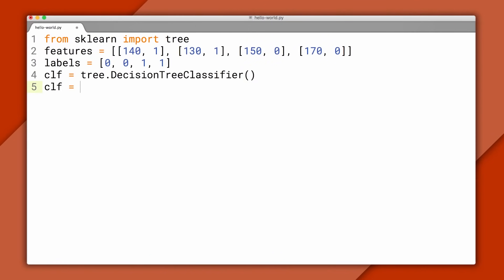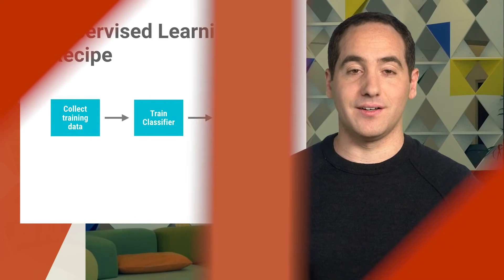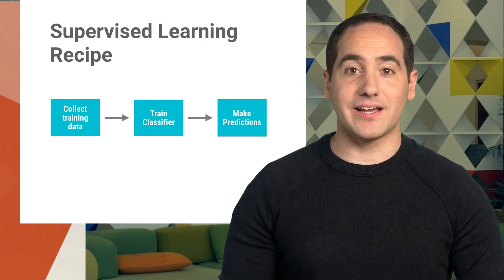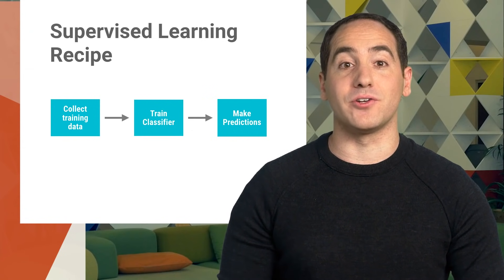In Scikit, the training algorithm is included in the classifier object, and it's called fit. You can think of fit as being a synonym for find patterns in data. We'll get into the details of how this happens under the hood in a future episode. At this point, we have a trained classifier, so let's take it for a spin and use it to classify a new fruit.